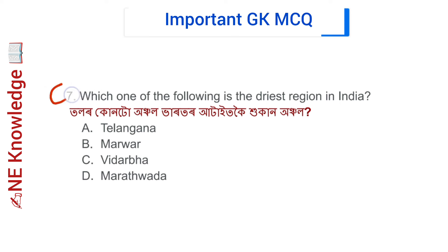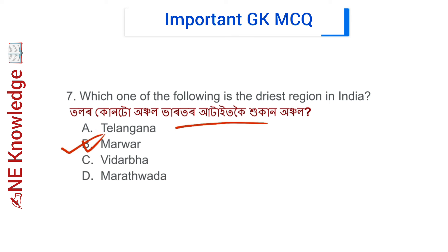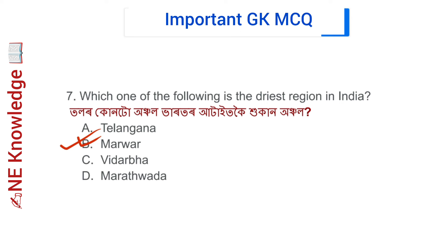Question number 7: Which one of the following is the driest region in India? Options: Telangana, Marwar, Vidarbha, and others. Correct answer: Option B — Marwar. Marwar is a region of southern-east Rajasthan state, and it is the driest region in India.